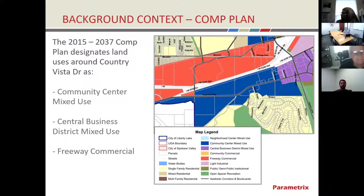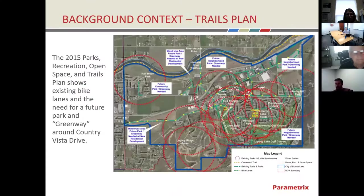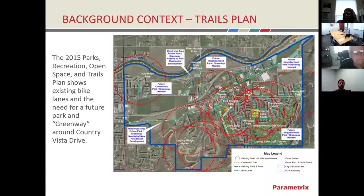The comprehensive plan is very much in line with the zoning — a community center mixed-use area, a central business district, and some freeway commercial areas are all identified. The 2015 Parks, Recreation, Open Space, and Trails Plan shows existing bike lanes on the corridor and the need for a future park and greenway. The corridor is identified as an aesthetic corridor, or a boulevard.